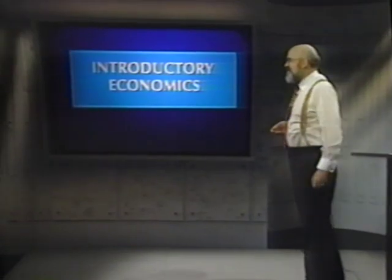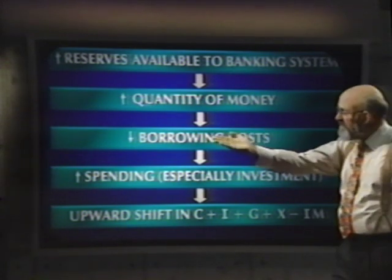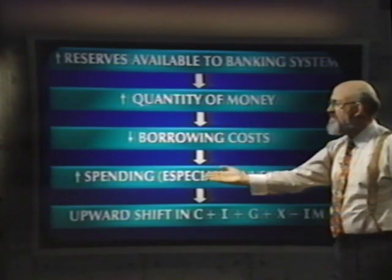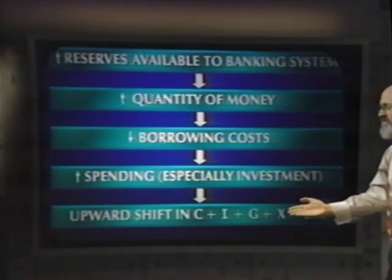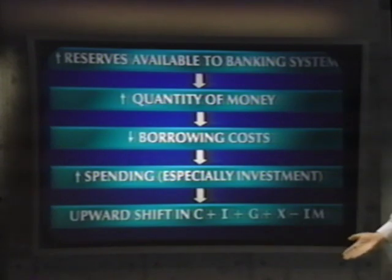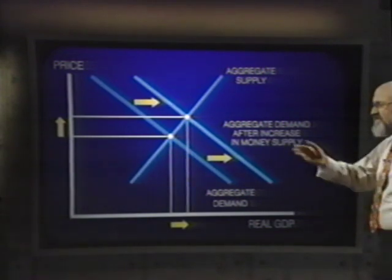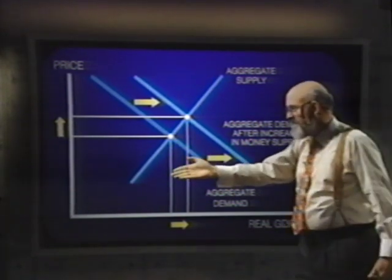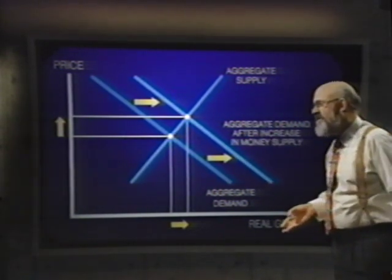When the Bank of Canada prints up more currency, the chartered banks get extra reserves, meaning extra capacity to grant more loans. But the only way banks can get people to take out these loans is to offer lower interest rates. Lower interest rates mean more people can afford to buy large items and firms can afford to expand plant and equipment. So consumption and investment increase, the aggregate demand curve shifts to the right, output increases, jobs are created, and prices rise.